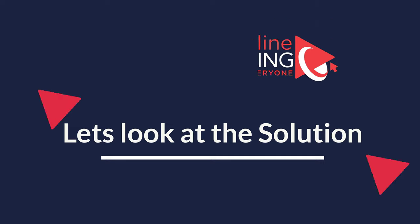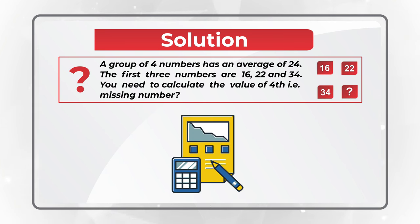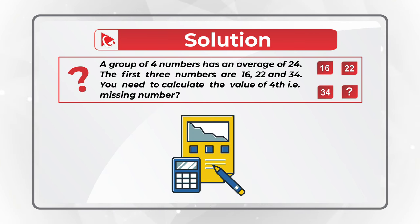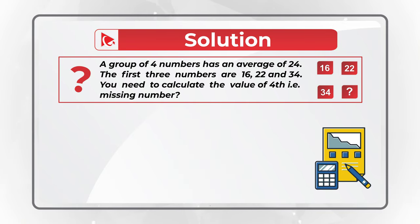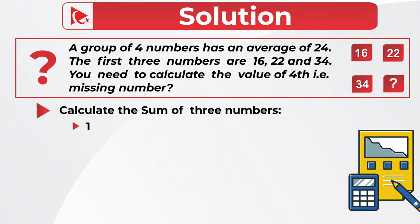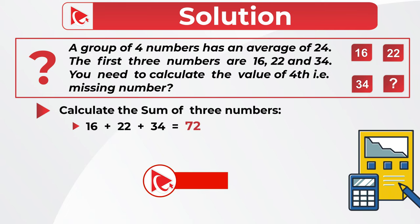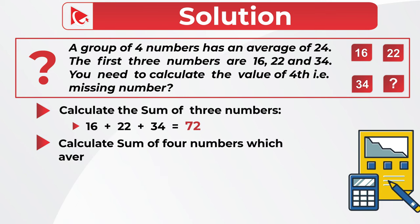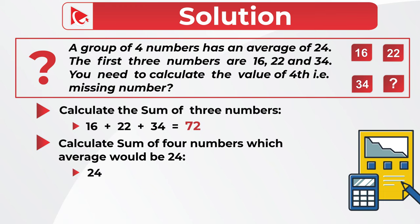To solve it, you can plug in one of the four solutions instead of the missing number and calculate the average to see which one is correct, but we're going to take a different route. In the first step, we're going to calculate the sum of the three existing numbers: 16 plus 22 plus 34 equals 72. In the next step, we need to determine what the sum of four numbers would be for an average of 24, so we multiply 24 by 4, which gives us 96.